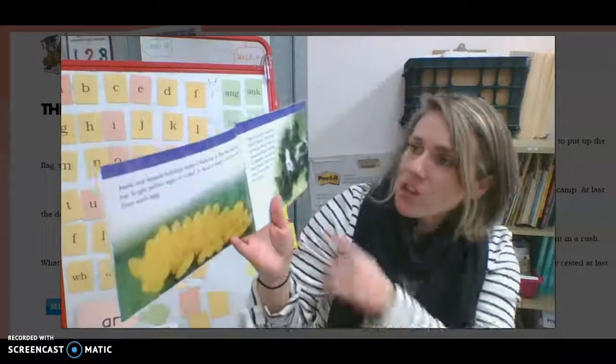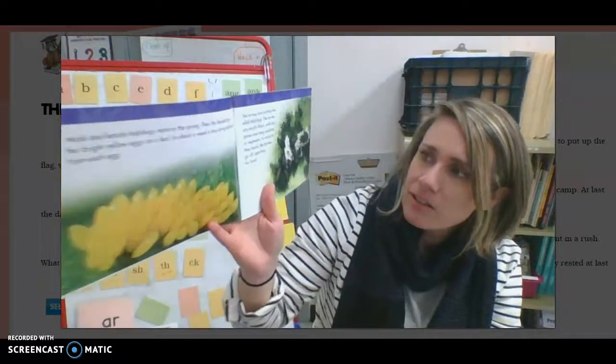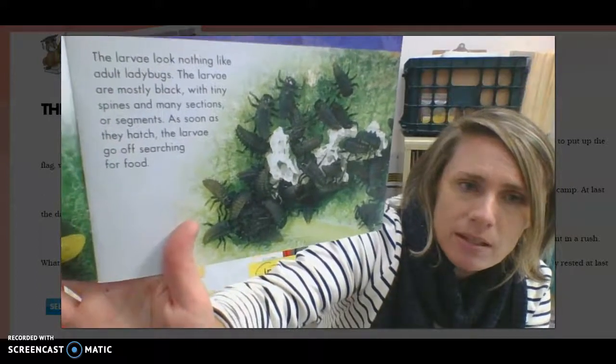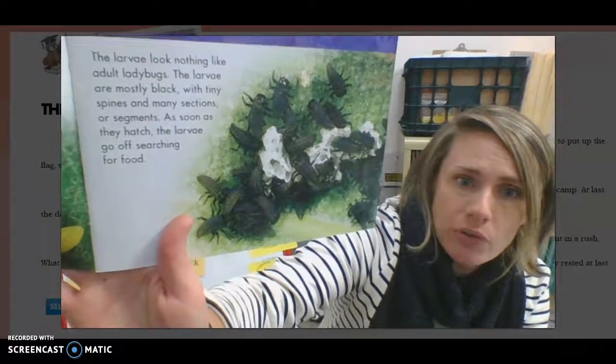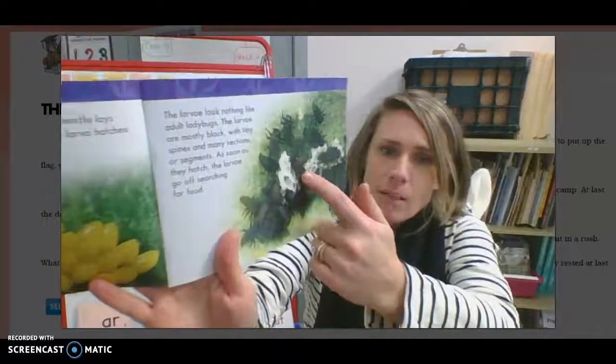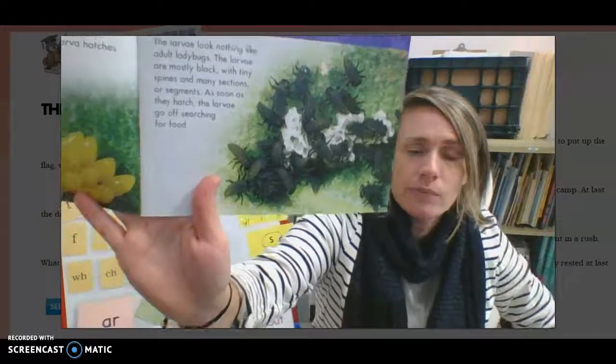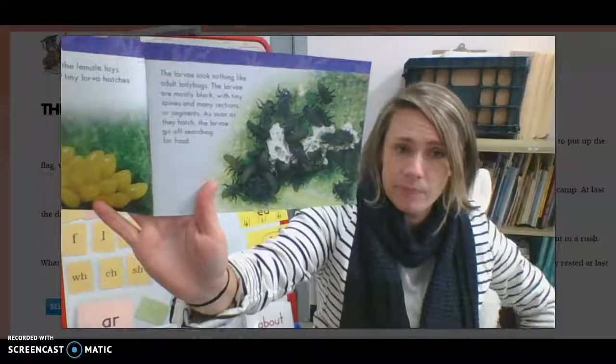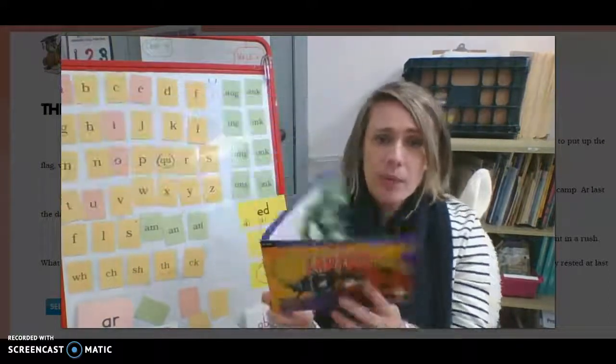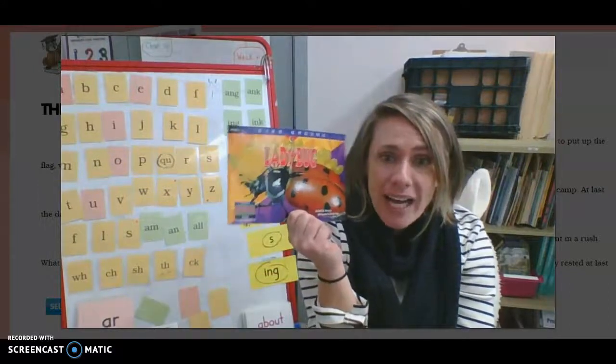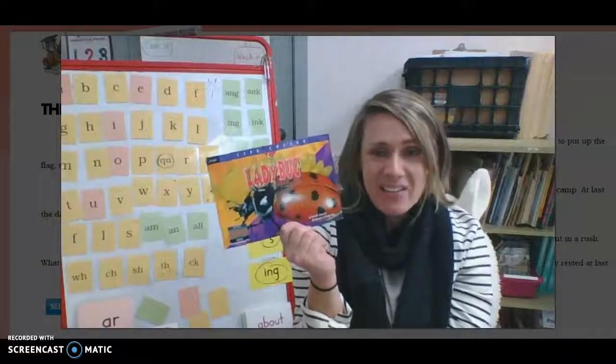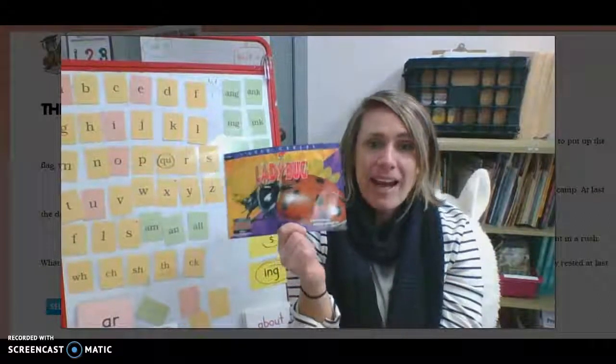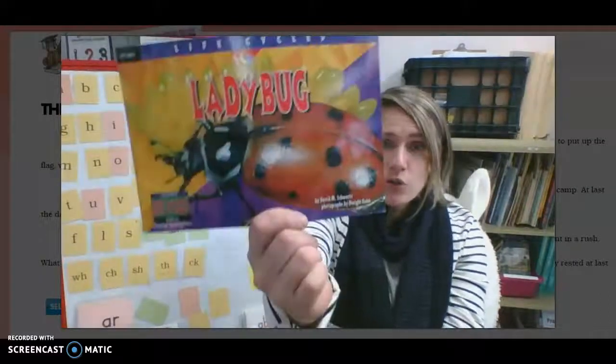All right, let's listen to one more page. The larvae look nothing like adult ladybugs. The larvae are mostly black with tiny spines and many sections or segments. As soon as they hatch, the larvae go off searching for food. So that looks like them hatching out. What are you picturing now? Yeah, you're searching for some food. And what did you learn? Okay, I'm going to stop there. What did we say this book is called? What kind of text? No, not ladybug. It's called nonfiction. Everybody say nonfiction. Okay, nonfiction is not fake. It's not make believe. True facts.